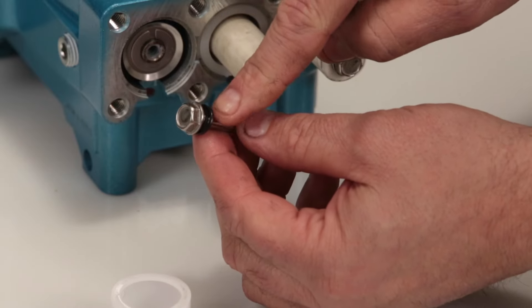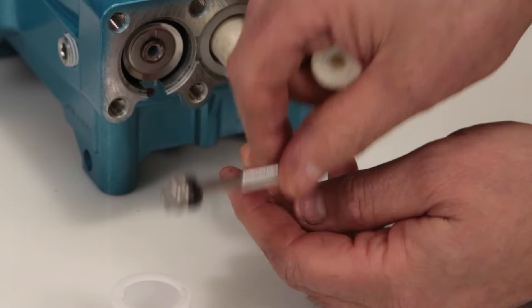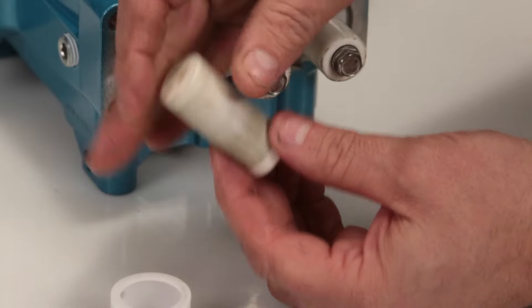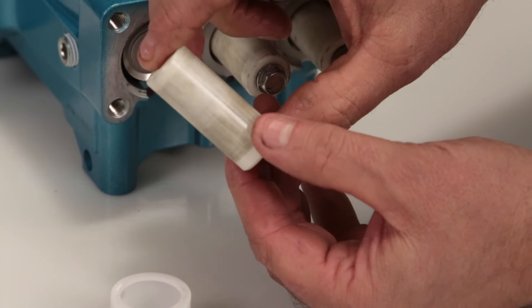Inspect the plunger retainer gasket for nicks or tears. Then inspect the ceramic plunger for cracks or scoring to the surface.